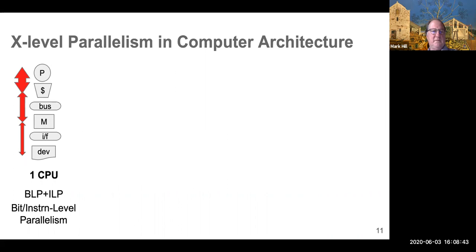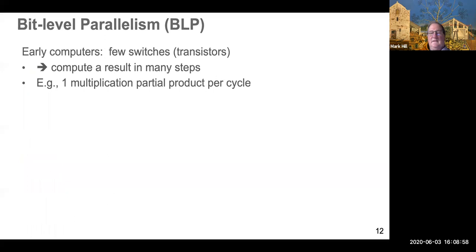So here's the cartoon of a uniprocessor with a processor, cache, bus, memory, interfaces to devices, and the red lines sort of show the bandwidth used, where a fatter line is more bandwidth, so there's higher bandwidth to the caches and less going down. And these used bit-level parallelism, BLP, and instruction-level parallelism from the beginning.